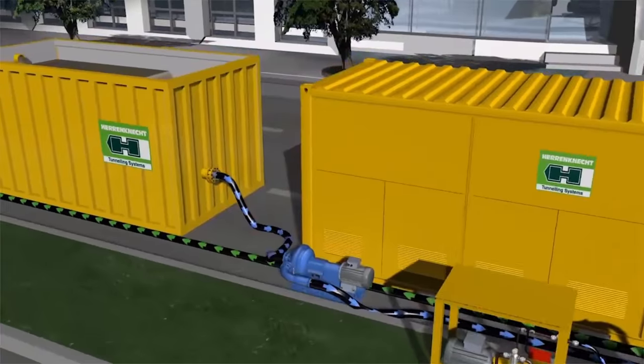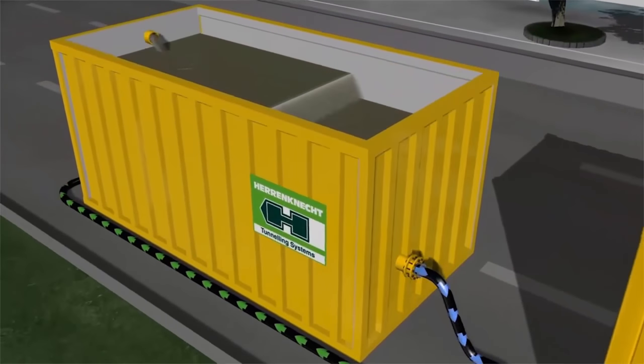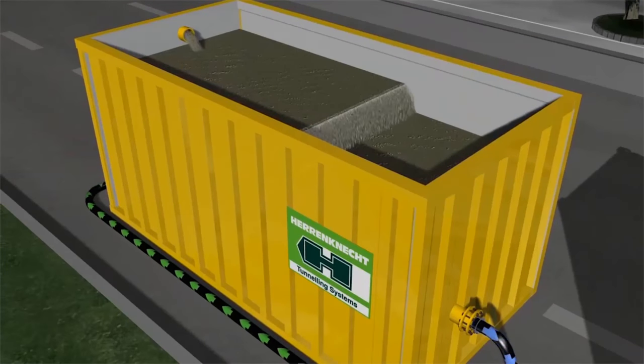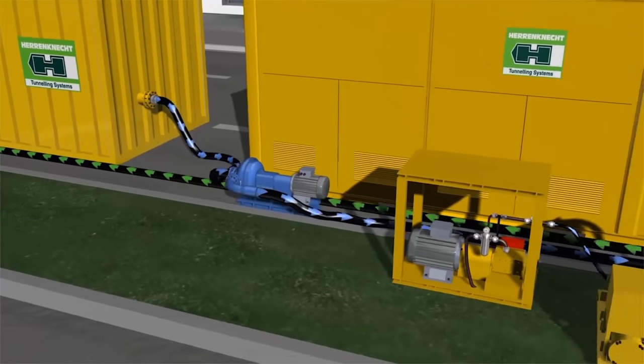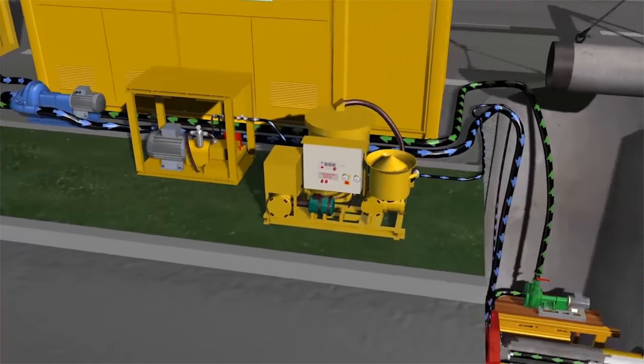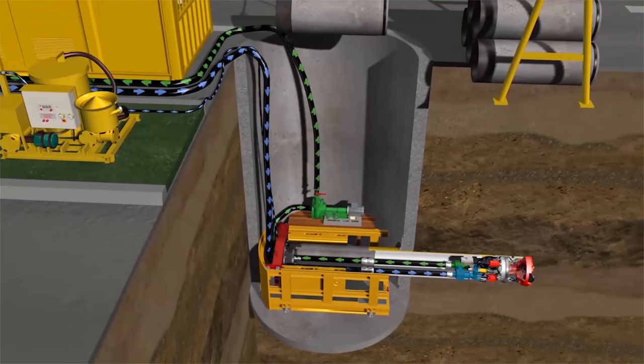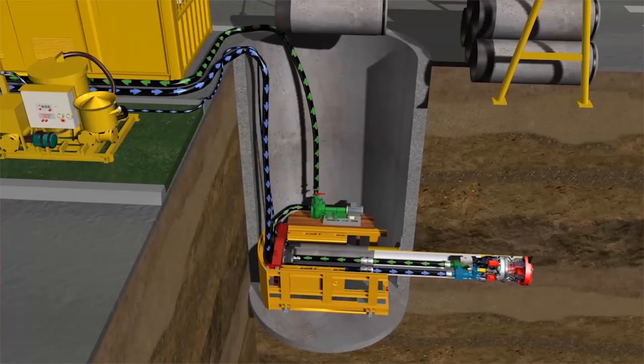The separation plant consists of two chambers. At first, the excavated material is pumped into the back chamber where it settles due to gravity. The overrunning water is filtered and enters the front chamber, from where the clean water is sucked by the slurry feed pump and returned to the slurry circuit, thus creating a closed system.